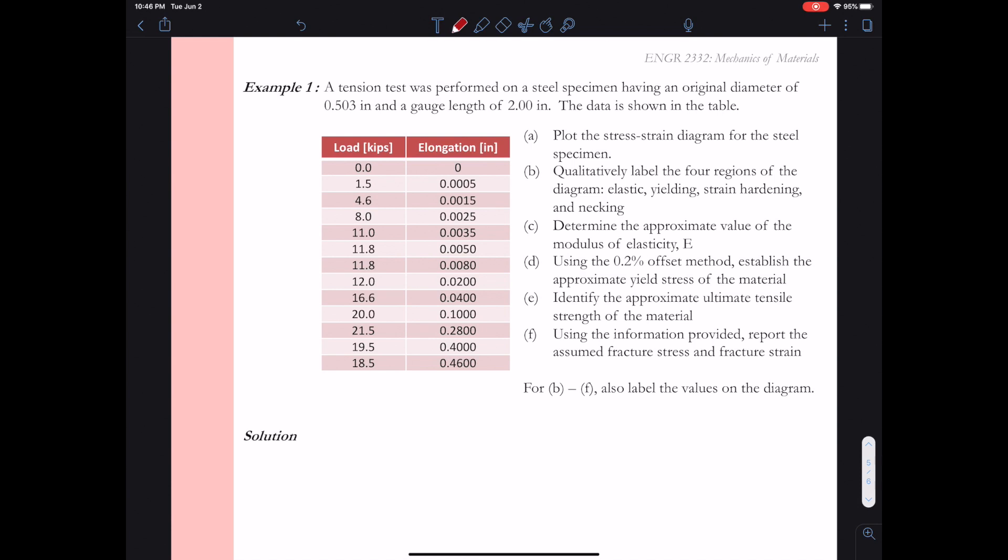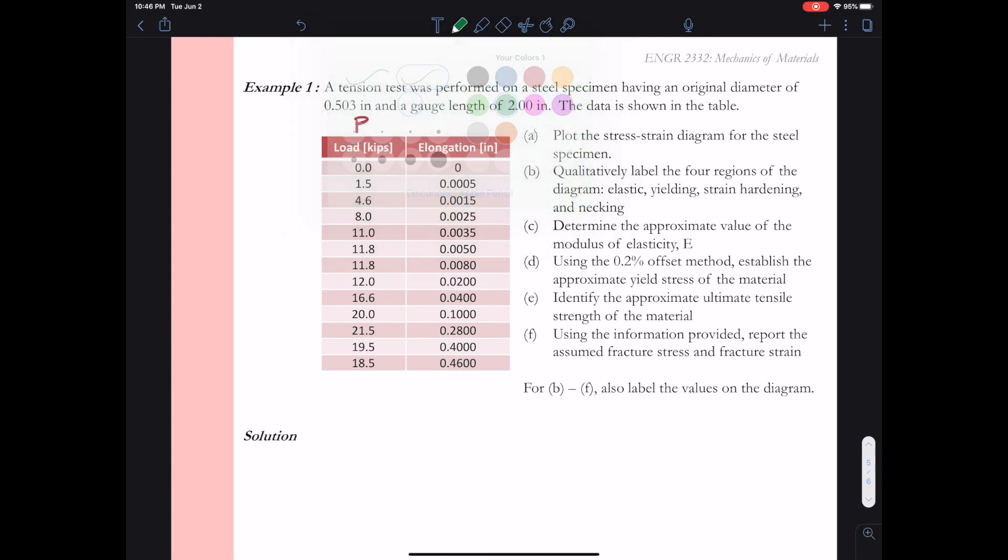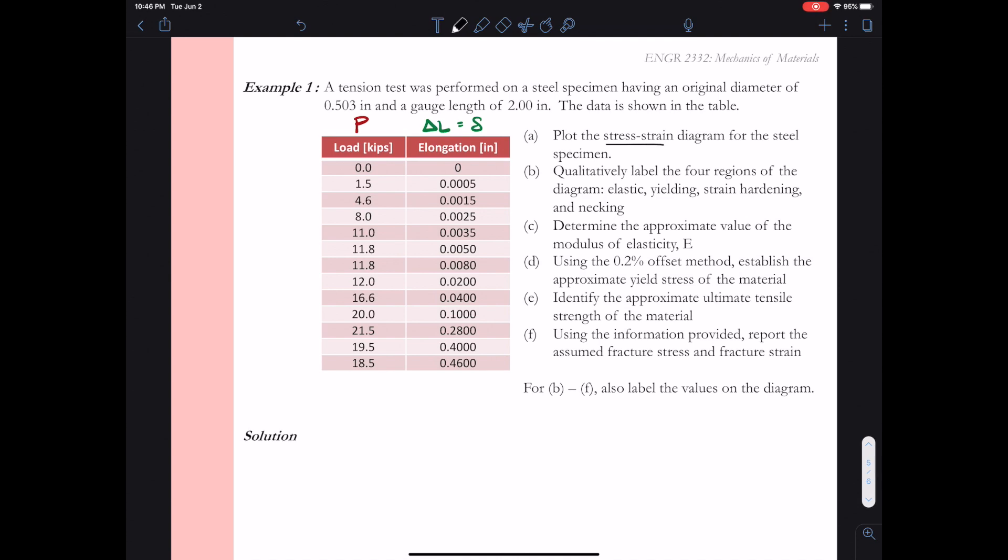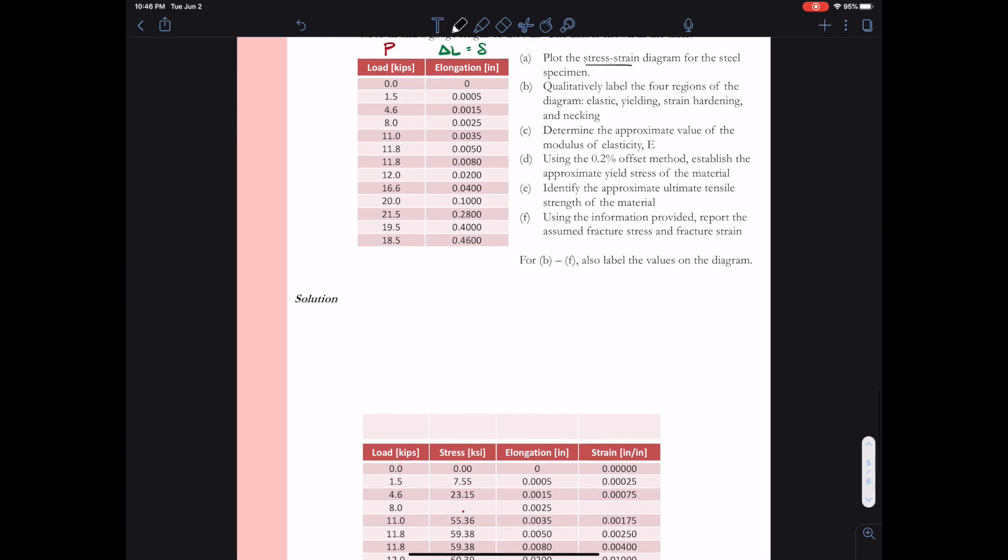Okay, so again we cover load versus elongation data from our test. The load is the value p or the variable that we've been using for force. The elongation is going to be delta l, the change in length of the specimen. Also we use the Greek letter little delta to represent elongation.